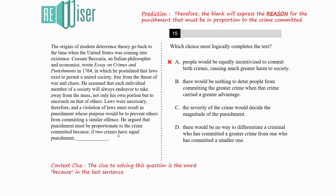Moving on to Option B: there would be nothing to deter people from committing the greater crime when that crime carried a greater advantage. Option B is clearly the right answer. It gives a very proper reason why punishment must be proportionate to the crime. If the punishment for crimes of varying magnitude is the same, a criminal would not hesitate to commit a more serious crime if it offered greater benefits. So to stop criminals, punishment must match the severity of the crime — otherwise criminals would take advantage of that.